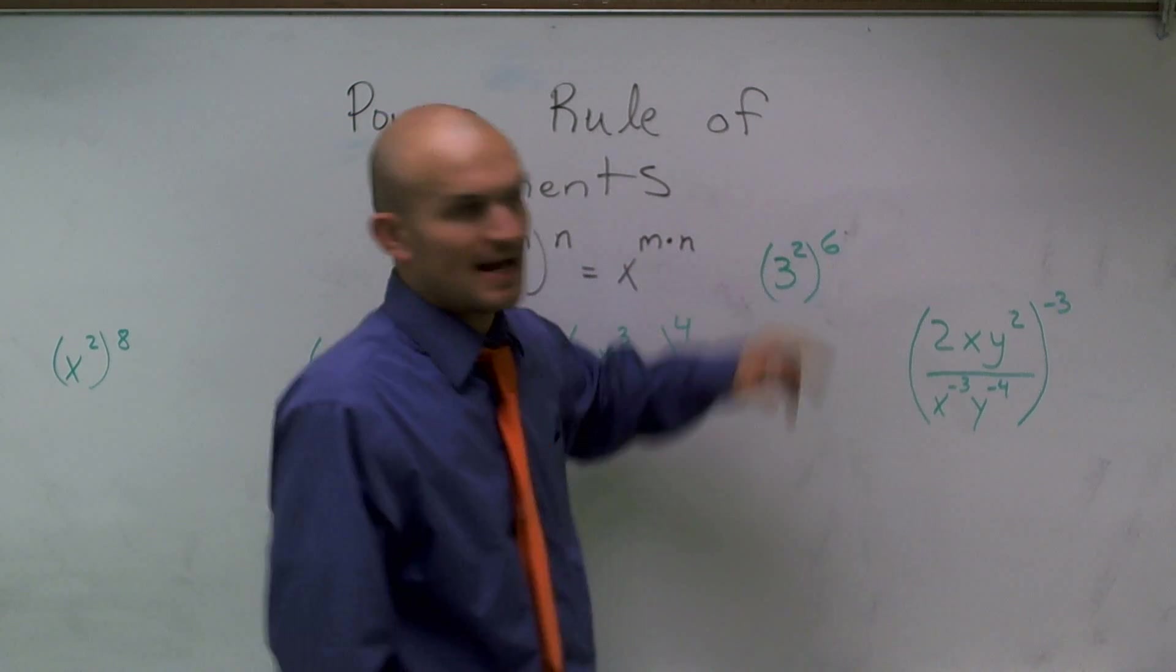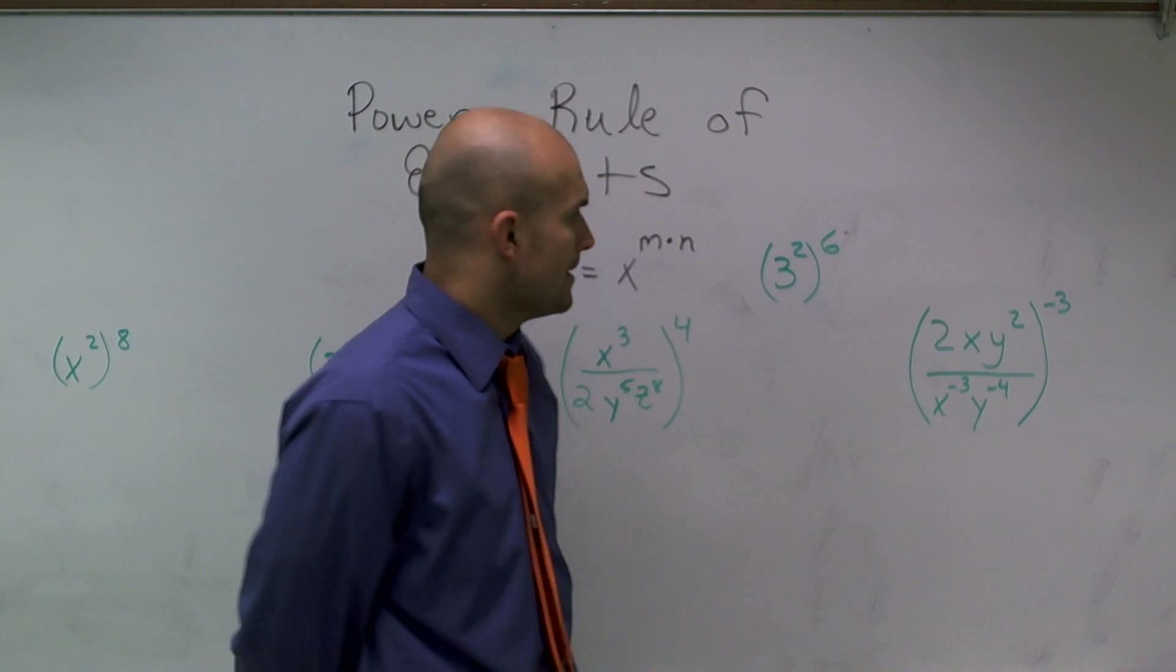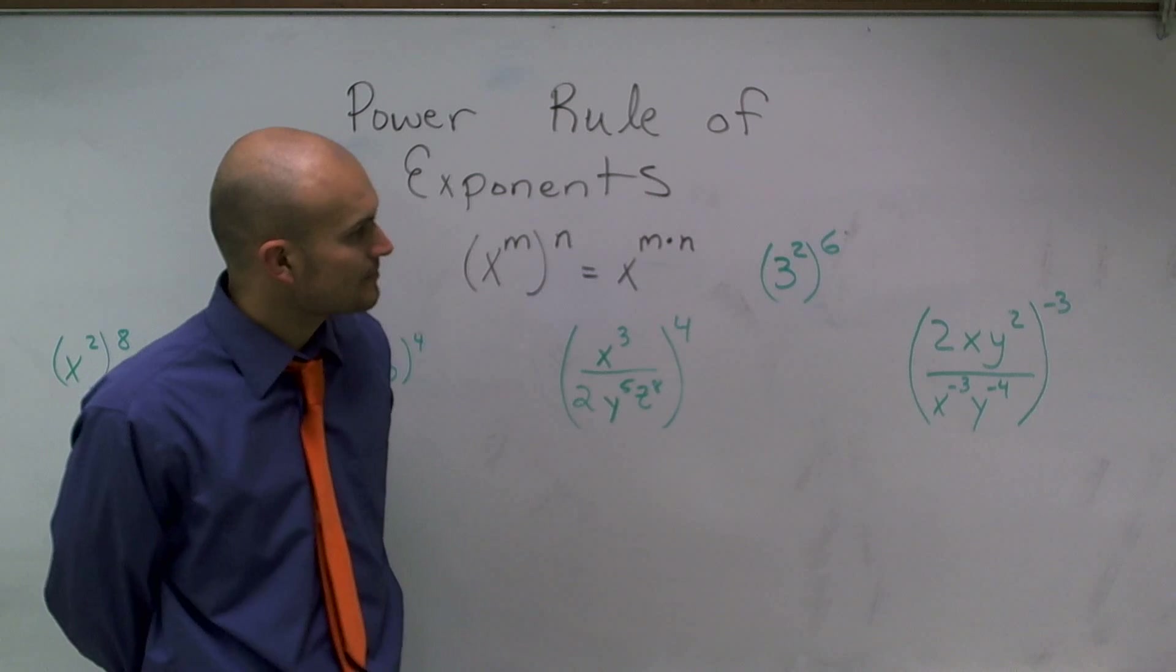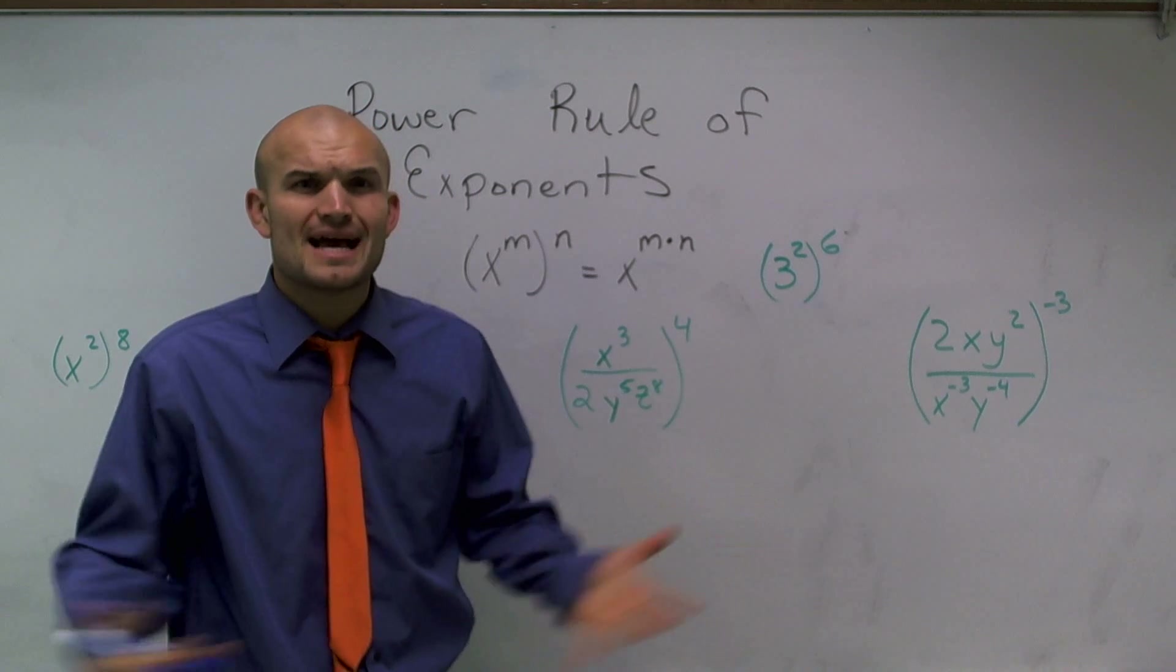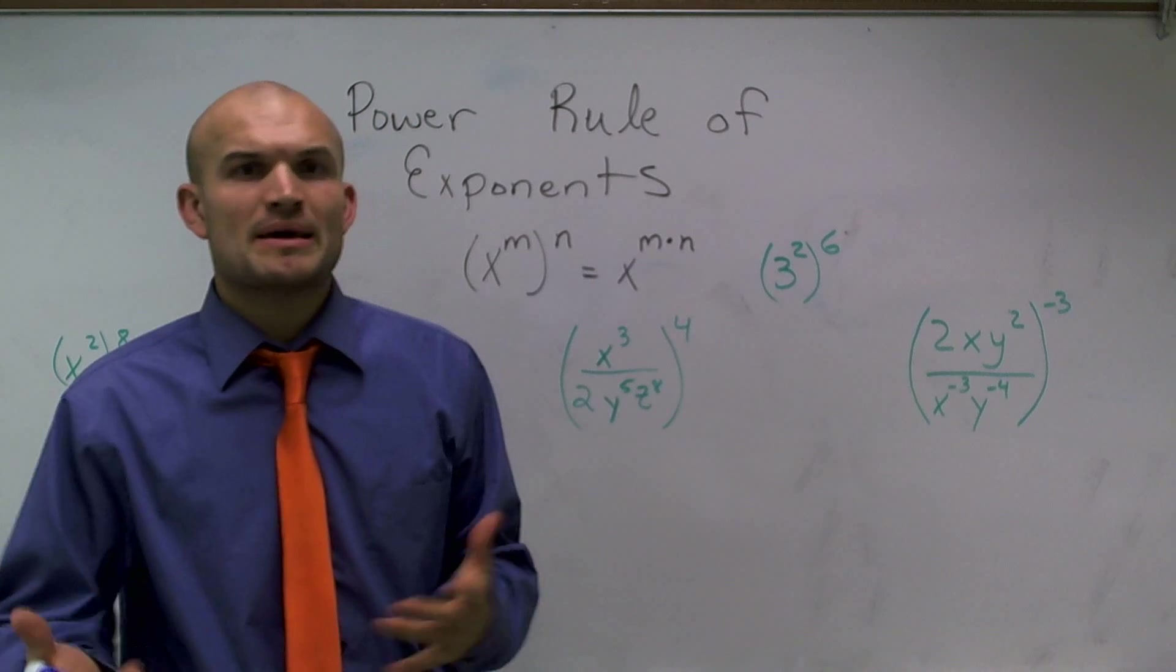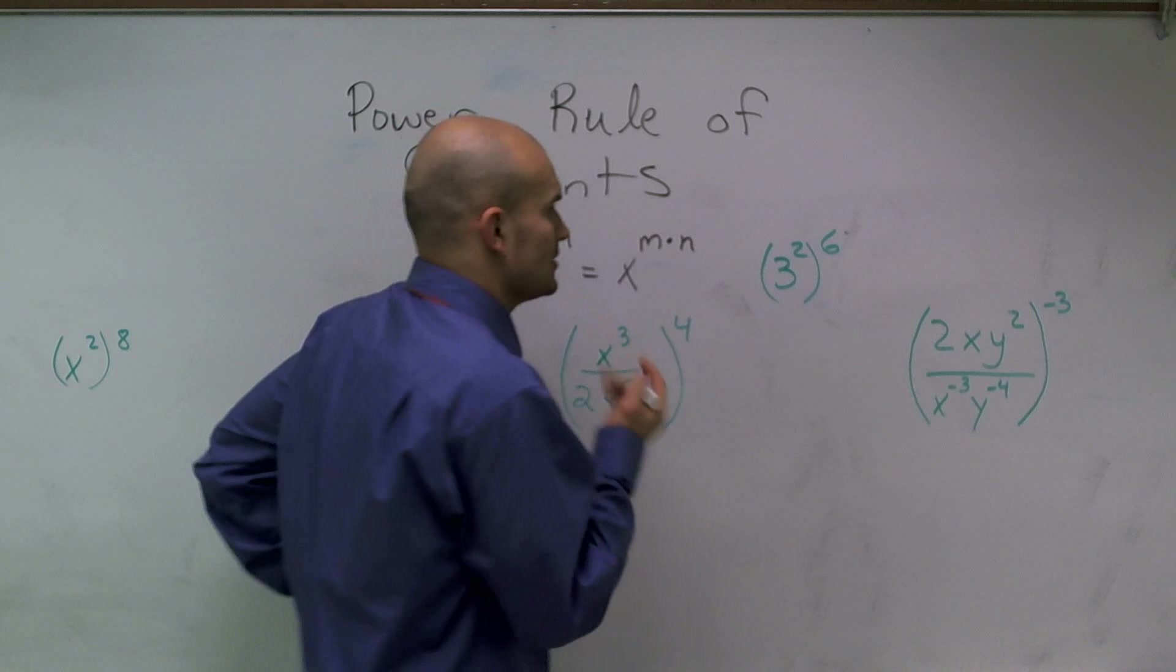Let's take a look. Let's say I had a number 3 raised to the second power. We know that answer is 9, right? But what happens when you have 3 squared and then it's raised to the sixth power? What exactly does that mean? How could I maybe figure this out if I don't know how to type this in my calculator?